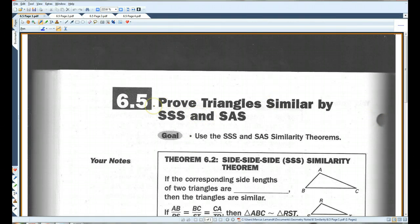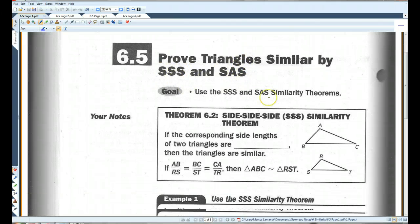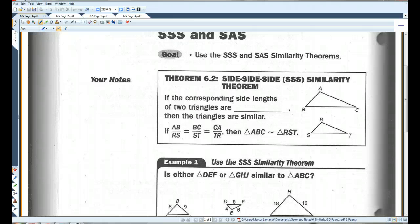All right, if you could please turn to the page in your notes that looks like this: 6.5, prove triangles similar by SSS and SAS. SSS similarity is different from the SSS congruency theorem. This says that if the corresponding side lengths of two triangles are proportional, then the triangles are similar.